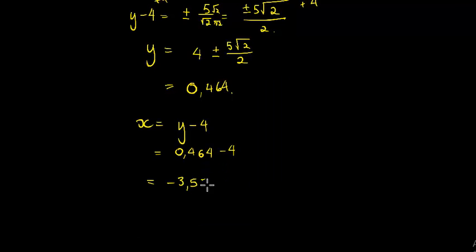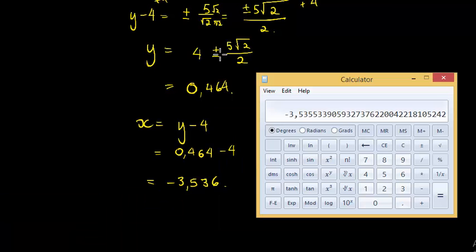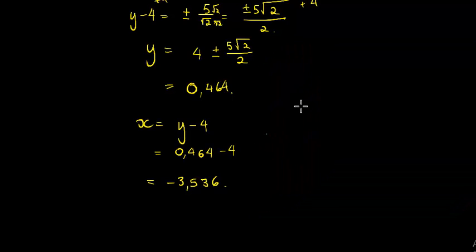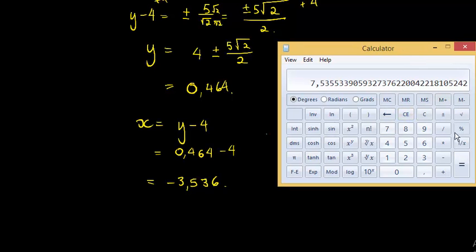And then the other one was the value with the positive, so it's 4 plus 5 times √2 divided by 2. That gives me 7.536. So the other one is y = 7.536, and when I subtract 4, I get 3.536.